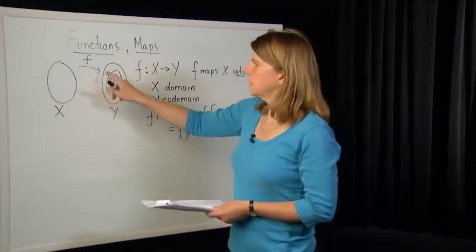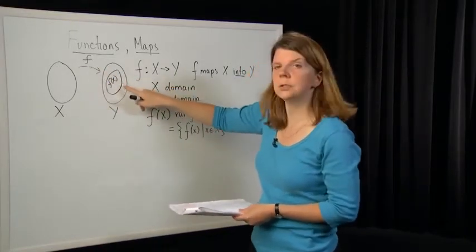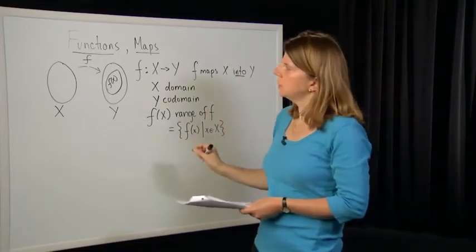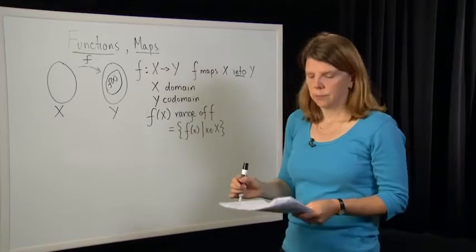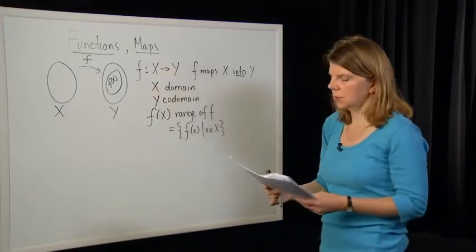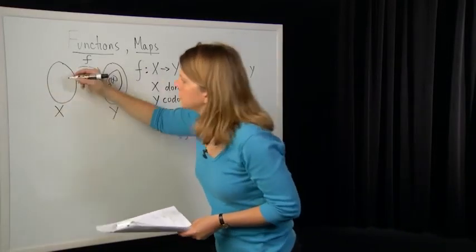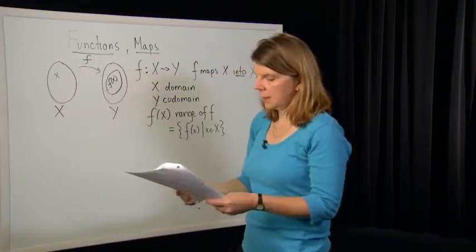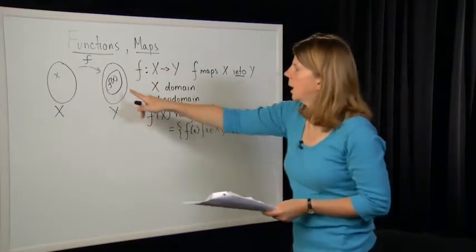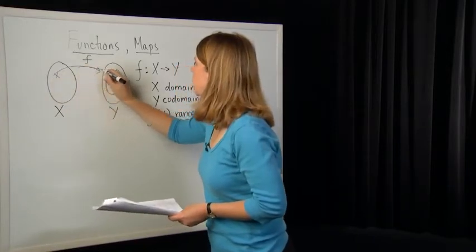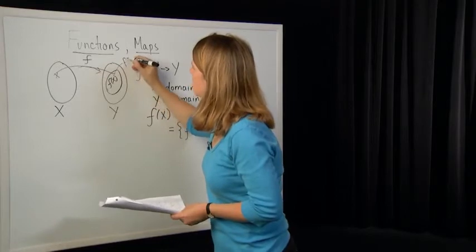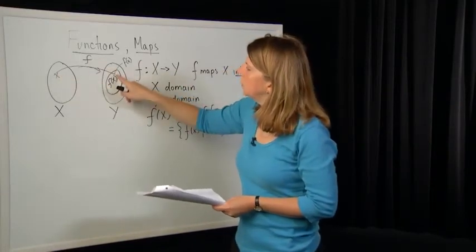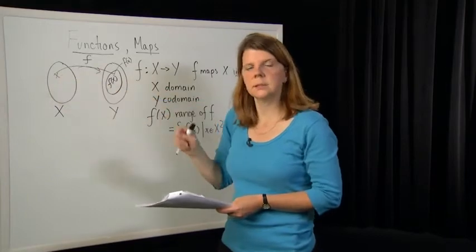A couple of things are important about this definition of a function. First, in general the range is not equal to the codomain. Also, by definition of a function, for all elements x in the set X, F assigns a unique value F of x. That point F of little x belongs in the range. The function is assigning a unique value F of x for each x — it's important that that value be unique.